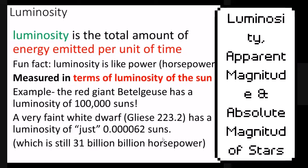Now, luminosity — what is luminosity? It is the total amount of energy emitted per unit of time. Think of it like a light bulb or horsepower — it is how much energy is being used by whatever is emitting the light.